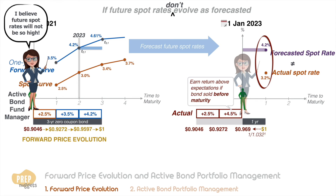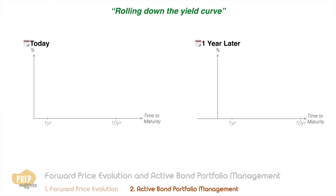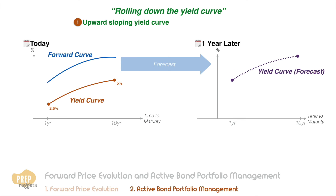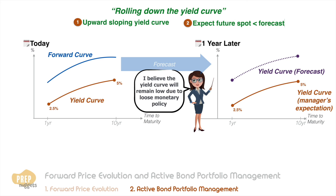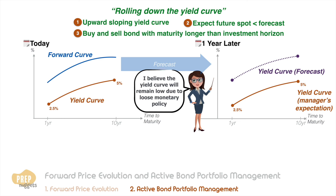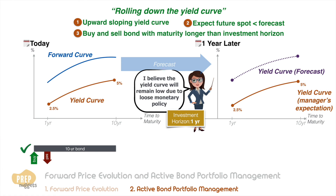This is the basis for a popular form of active bond fund management: the strategy of rolling down the yield curve. If the yield curve is upward sloping, the forward rates would suggest a raised yield curve in the future. However, this may often not be the case. If the bond fund manager expects the central bank to keep benchmark interest rates low for the next few years, the yield curve is more likely to remain where it is. As such, the manager can potentially earn higher returns by buying and selling a bond with longer maturity than matching the bond maturity with the investment horizon.